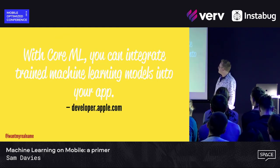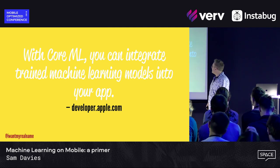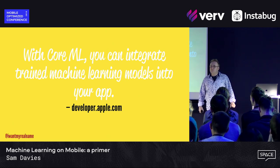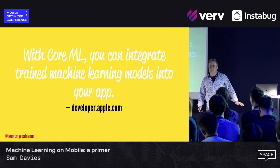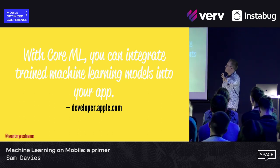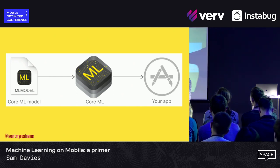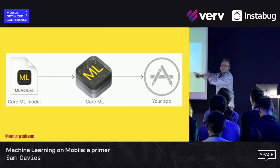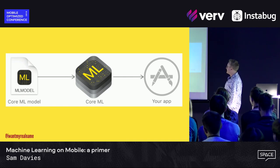Apple have very helpfully written on their website: with CoreML, you can integrate trained machine learning models into your app. That in itself isn't the most helpful of descriptions, but don't worry, because they've got a really good diagram which you can't really see. Over here it says ML model, there's a big thing in the middle that says CoreML, and then there's your app at the other end. So I think that explains exactly what you need to know about what CoreML does. Well done, Apple. That looks amazing.